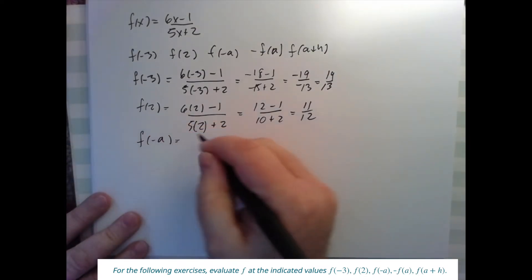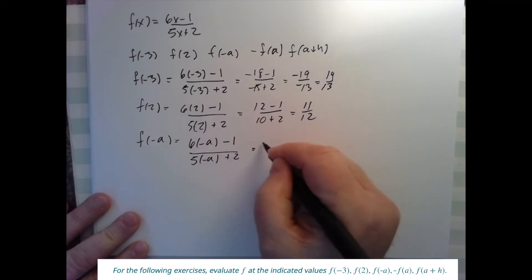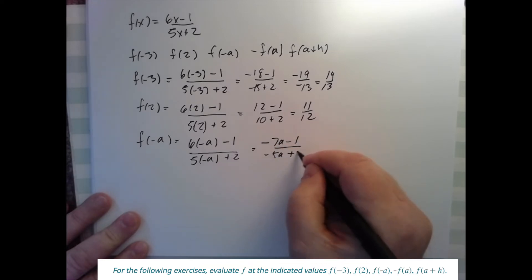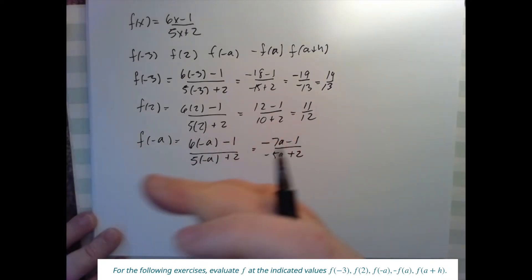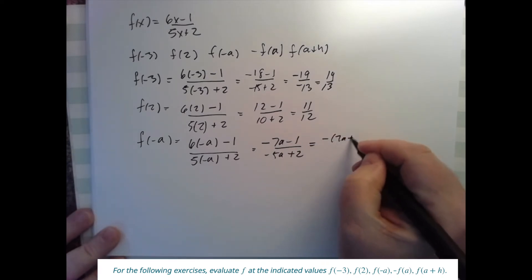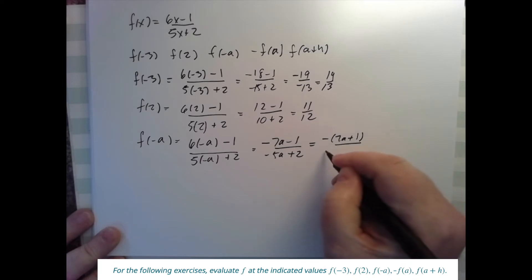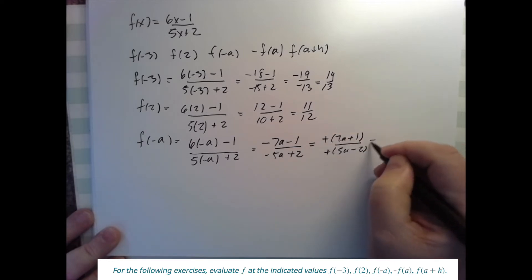So let's see what else do we have here. f of minus a, that would give me six times minus a minus one over five times minus a plus two, which would give me minus 7a minus one over minus 5a plus two. Are we done there? Sure. We can do some other manipulations like factor a minus out of the top and the bottom. And so we did that, we'd get 7a plus one over 5a minus two. Then the minuses, the subtractions, you know, the minus signs, they divide out. We get 7a plus one over 5a plus two.